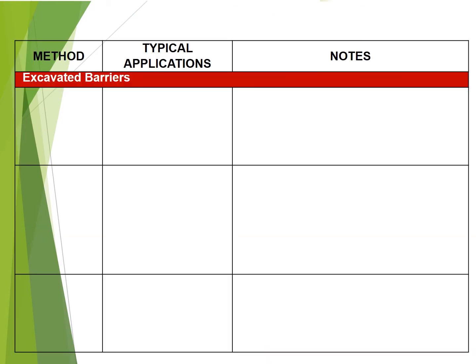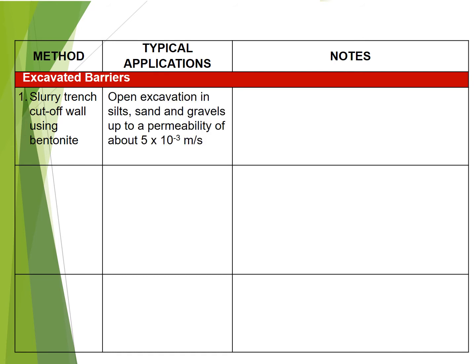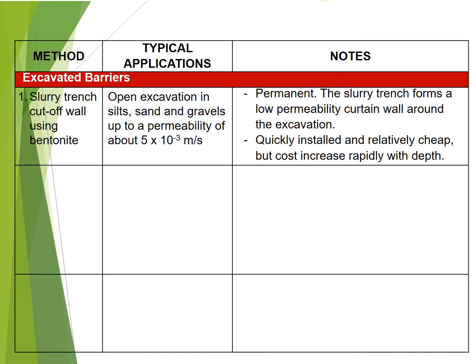B) Excavated barriers. 1. Slurry trench cutoff wall using bentonite: used for open excavations in silts, sands and gravels up to a permeability of about 5 × 10⁻³ metres per second. Permanent. The slurry trench forms a low permeability curtain wall around the excavation. Quickly installed and relatively cheap, but costs increase rapidly with depth.